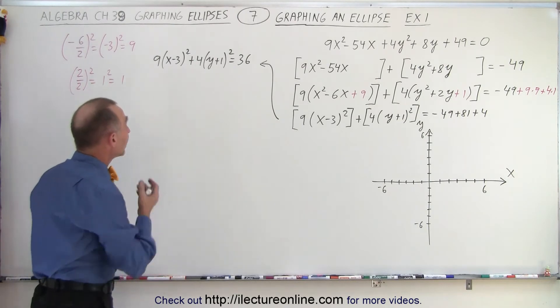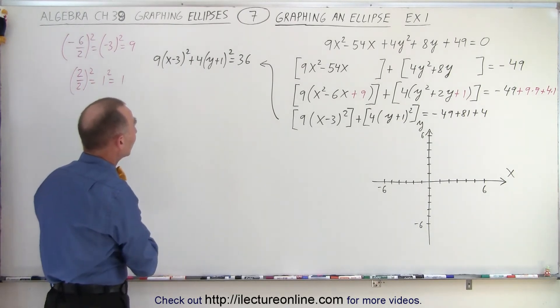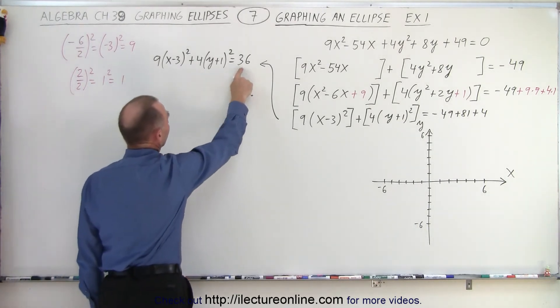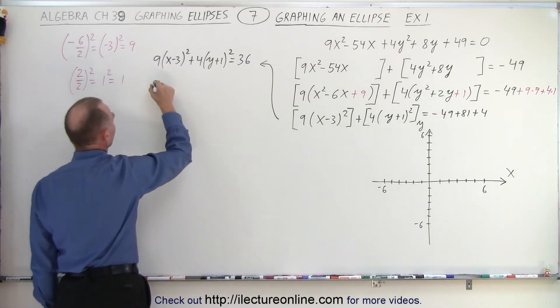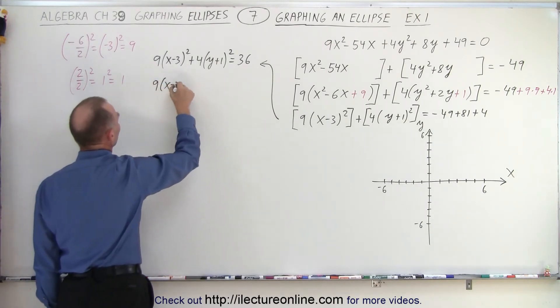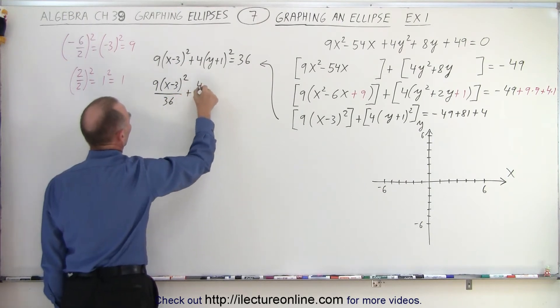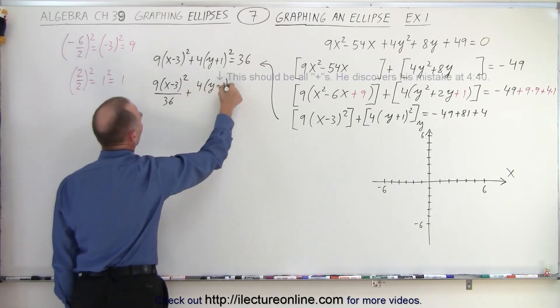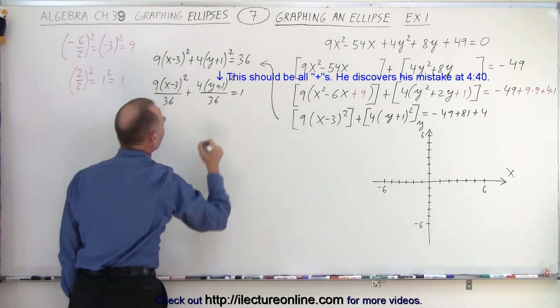So next, what we need to do is we need to divide both sides by 36, because essentially we want 1 there. So we get 9 times x minus 3 squared over 36 plus 4 times y minus 1 squared over 36 is equal to 1.